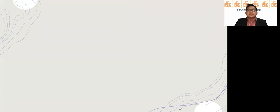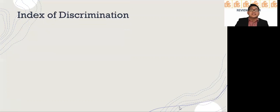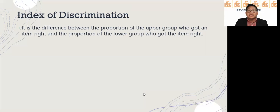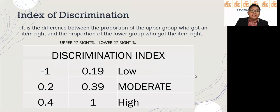Let's proceed to index of discrimination wherein it is the difference between the proportion of the upper group who got an item right and the proportion of the lower group who got the item right. This is where the upper and the lower group is very crucial. That's why we get the upper 27% and the lower 27%.